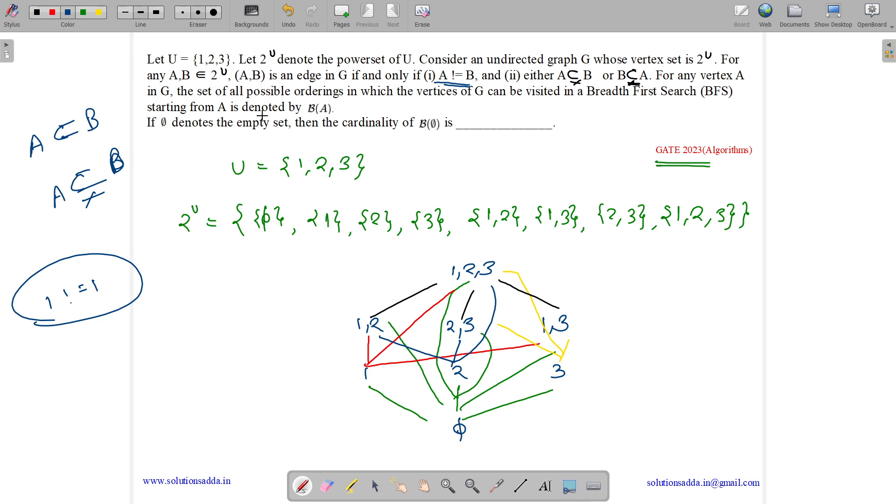Now it says, for any vertex A in G, the set of all possible orderings in which the vertices of G can be visited in a breadth-first search starting from A is denoted by B of A. So B of A is basically the cardinality of the number of BFS possible starting from A.